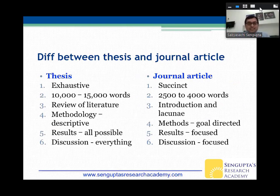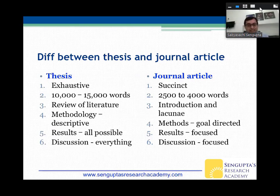Let's understand the difference between a thesis and a journal article. There are certain basic differences. A thesis is extremely exhaustive — going into 60, 70, 80 pages sometimes — while a journal article is very succinct and short. A thesis usually runs between 10,000 to 15,000 words, while a journal article is almost a fourth of that — about 2,500 words, though some journals allow up to 4,000.